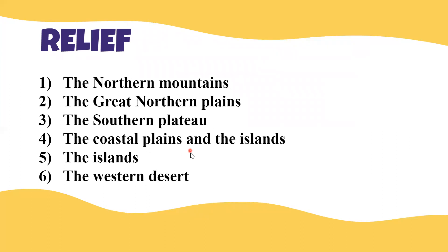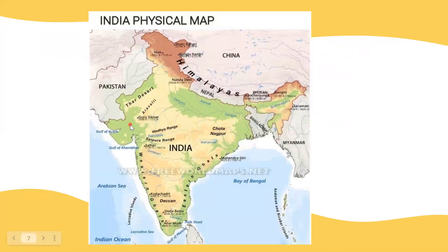Now we are going to move on to the relief features. What are the relief features — the special features we have in our country India? They are: the Northern Mountains, the Great Northern Plains, the Southern Plateau, the Coastal Plains, Islands, and the Western Desert. This picture shows the relief features, including the Himalayas.